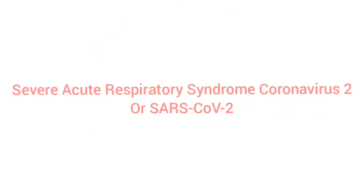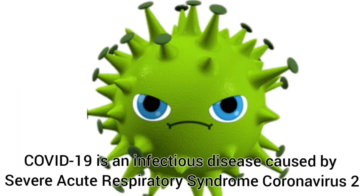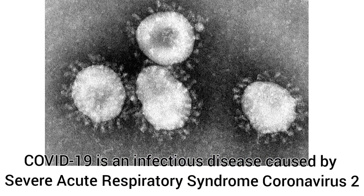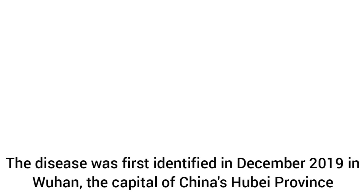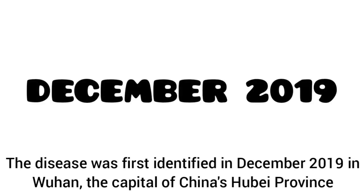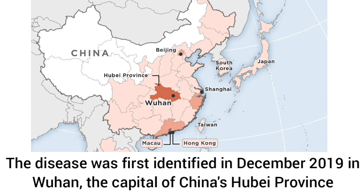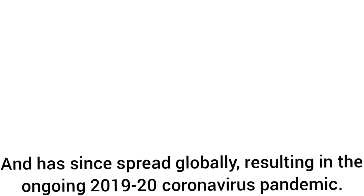Severe acute respiratory syndrome coronavirus 2, or SARS-CoV-2 — a small description of COVID-19. COVID-19 is an infectious disease caused by SARS-CoV-2. The disease was first identified in December 2019 in Wuhan, the capital of China's Hubei province, and has since spread globally, resulting in the pandemic.